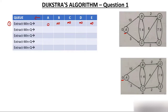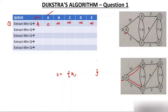The first step is to extract the minimum from Q. The minimum is A, so you extract node A and add it to the set S. On extracting node A, find its adjacent nodes — B and C are adjacent to A. Now you have to relax edges A→B and A→C.